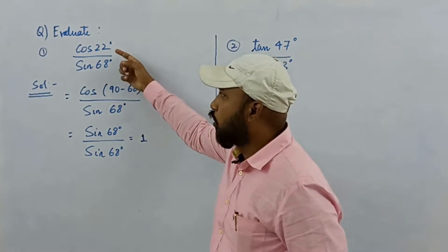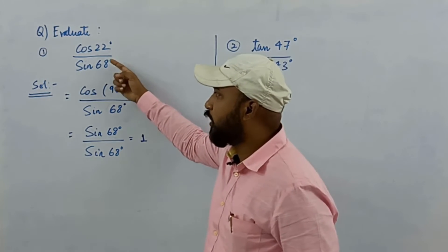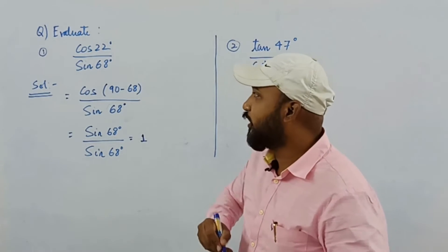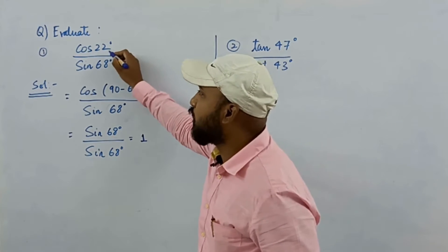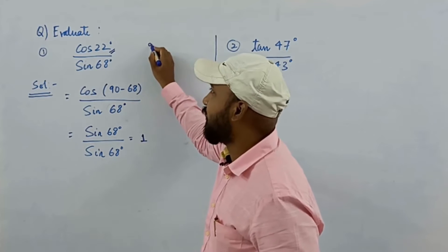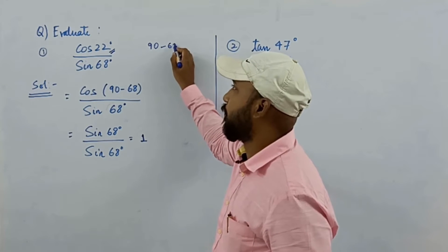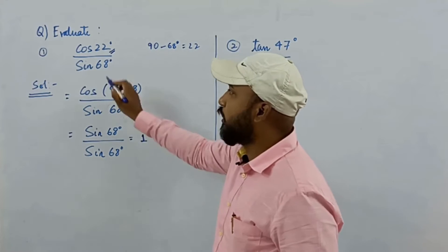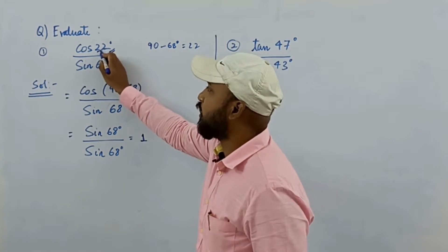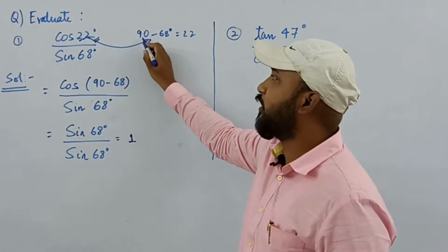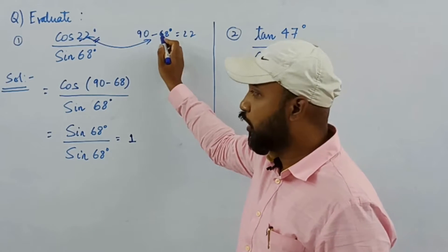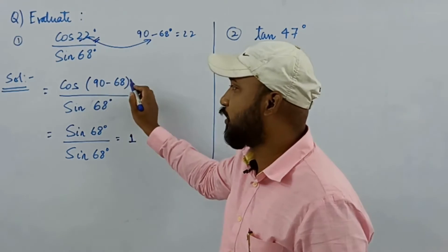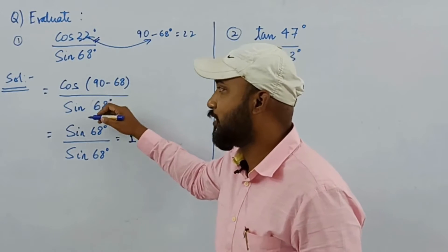We have one question: cos 22 divided by sin 68. One thing you can clearly understand here is that 22 can be written as 90 minus 68. So in place of 22, we can write 90 minus 68, giving us cos(90 − 68) divided by sin 68.